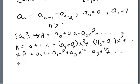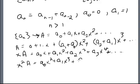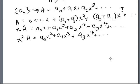Similarly, x² is a sequence that maps only 2 to 1, with everything else mapped to zero. Multiplying x² times A gives: a₀x² plus a₁x³ plus a₂x⁴ plus dot dot dot.